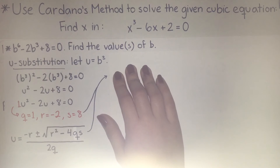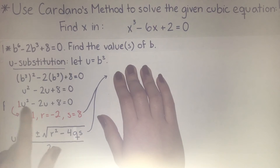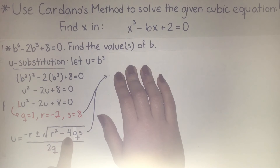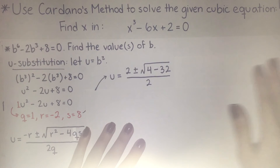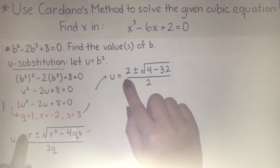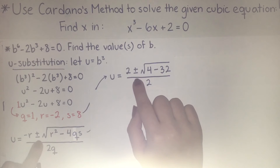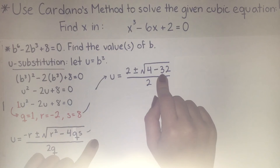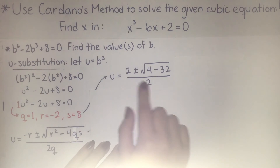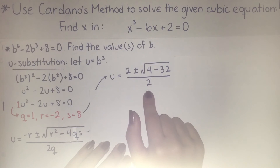Using our quadratic formula, u equals negative r plus or minus the square root of r squared minus 4qs, all divided by 2q. Plugging in the values: negative r gives positive 2, r squared is 4, negative 4 times q times s is negative 4 times 1 times 8 equals negative 32, and 2q equals 2. So our equation becomes 2 plus or minus the square root of 4 minus 32, all over 2.